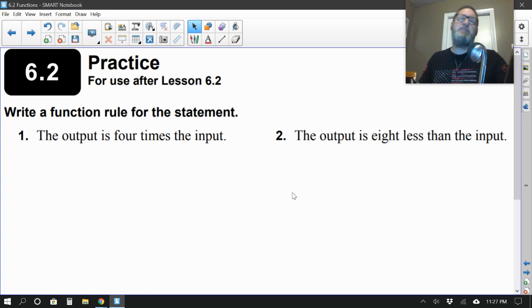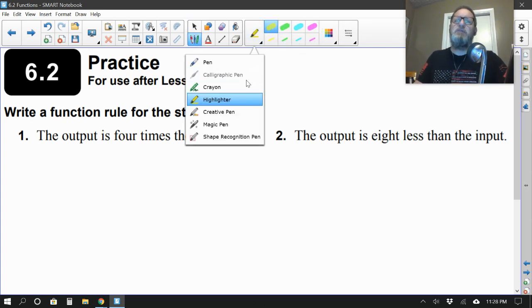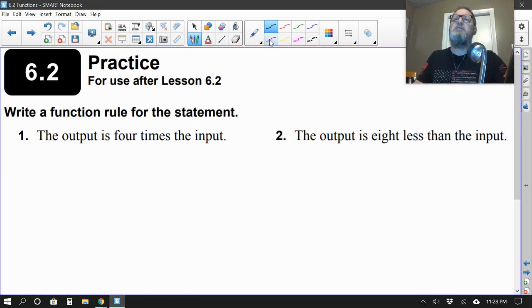All right, so we're going to start doing these. I'm going to do the odds for a little while, and then I'm going to switch to doing some evens for us. All right, here we go. Grab a pen here. Purple will do. So odds first. Write the function rule for the statement. Okay, so we already looked at some examples, so let's see if we can do one ourselves. The output is 4 times the input. Now, if you recall earlier, the output was the variable y, and the input is the variable x.